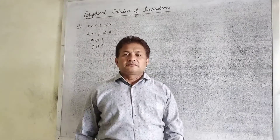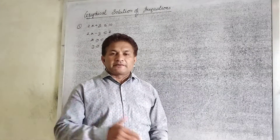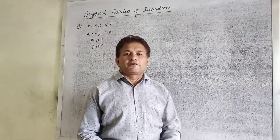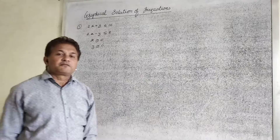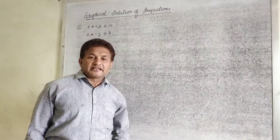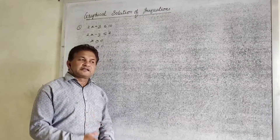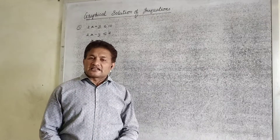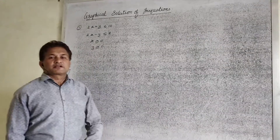Today we are going to learn the graphical solution of linear equations. In a previous video we have seen how to draw the graph of linear equations. Now, solution means the set of all points which satisfy all the given conditions. The number of points which satisfy all the conditions — that set is called your solution.